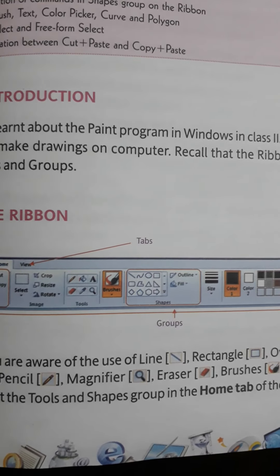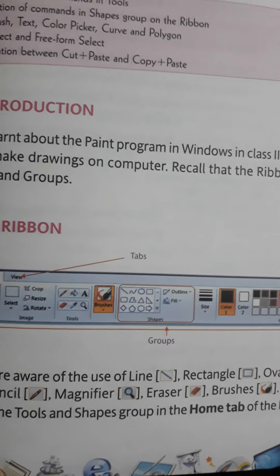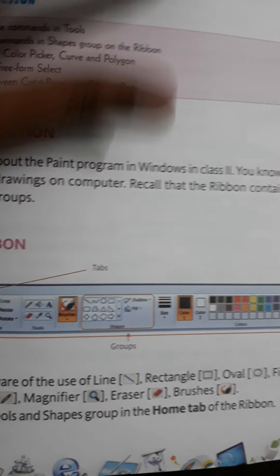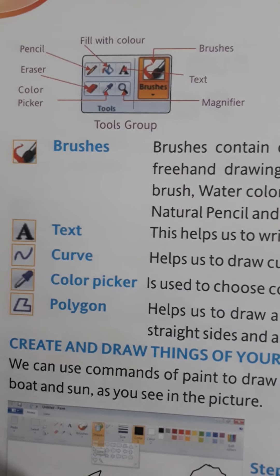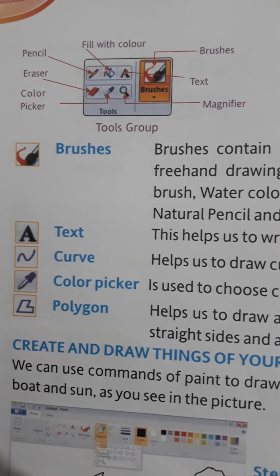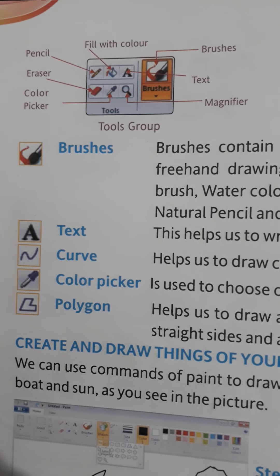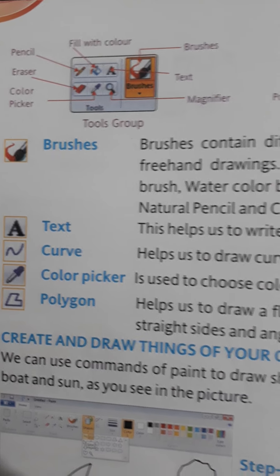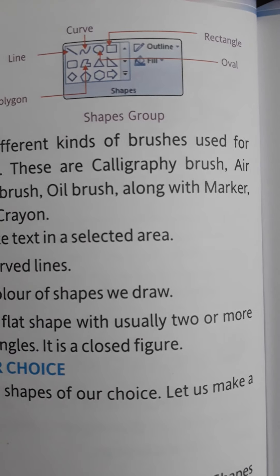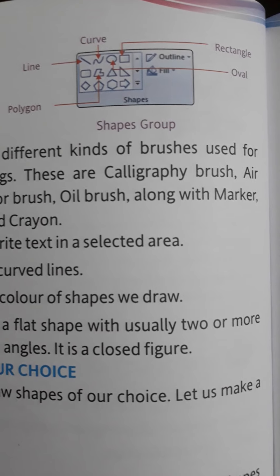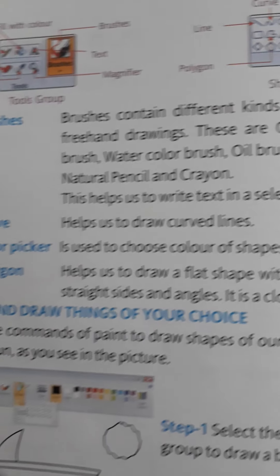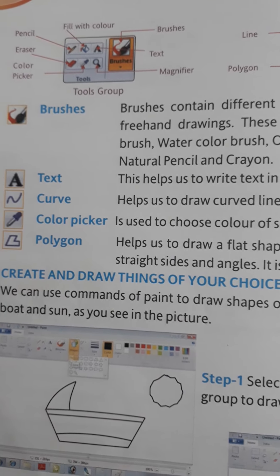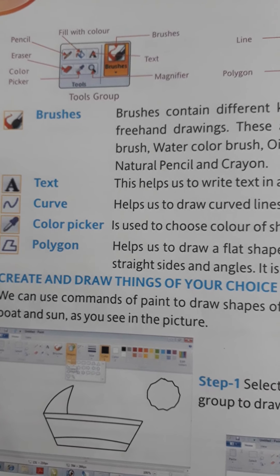We will also see different tools and shapes from the Shapes group. This part is called the Tools group — it has different tools. And this part is the Shapes group, which has different kinds of shapes. Let's see the different tools from the Tools group.